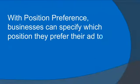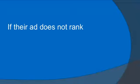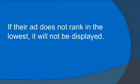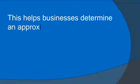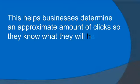With position preference, businesses can specify which position they prefer their ad to appear. Businesses can choose their highest and lowest positions. If their ad does not rank within the lowest, it will not be displayed. This helps businesses determine an approximate amount of clicks so they'll know what they'll have to pay.